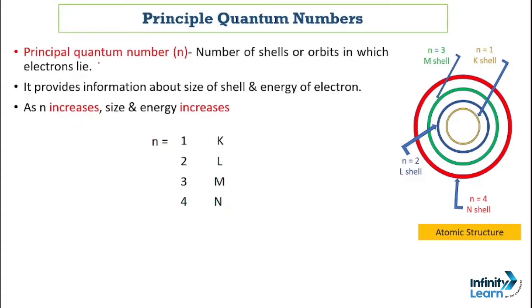The principal quantum number is denoted by small n, and it tells us about the number of shells or orbits in which electrons revolve around the nucleus. The first circular path is known as the first shell and is denoted by K, the second shell by L, the third by M, and the fourth by N. It provides information about the size of the shell and the energy of the electron — as the number of shells increases, the radius increases, so size and energy also increase.